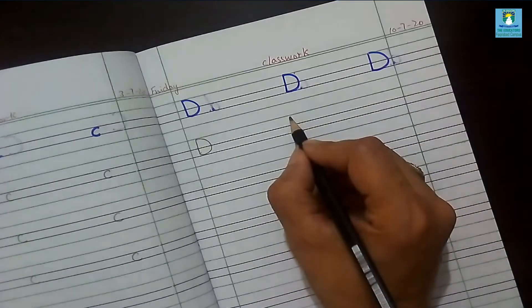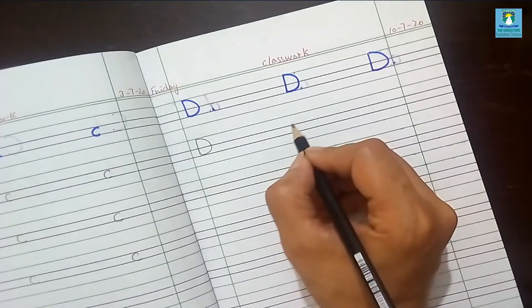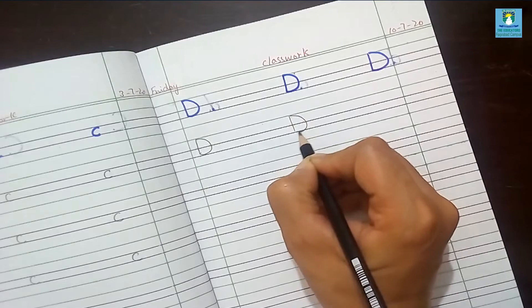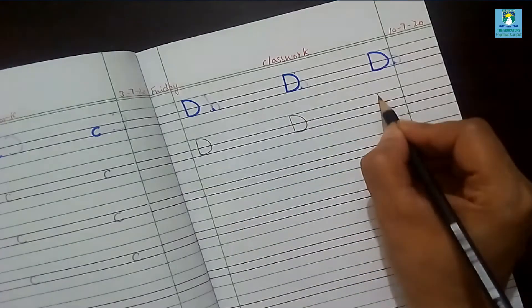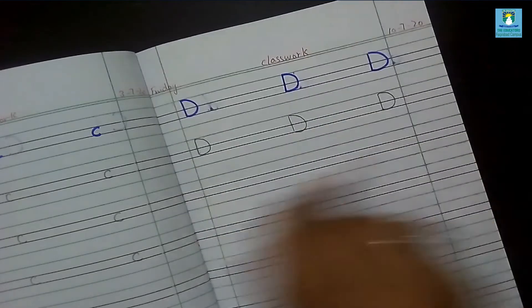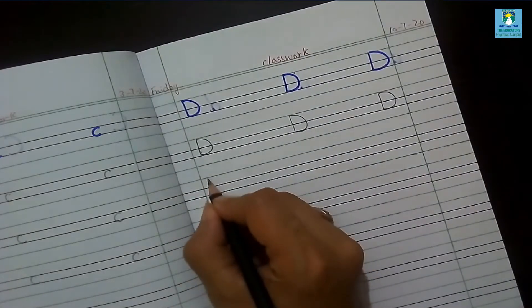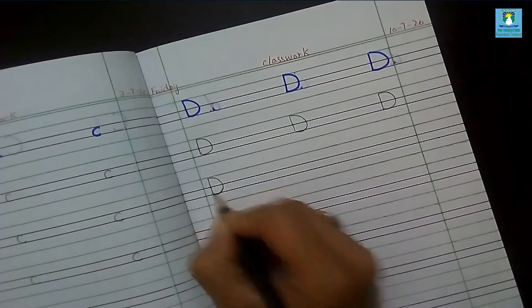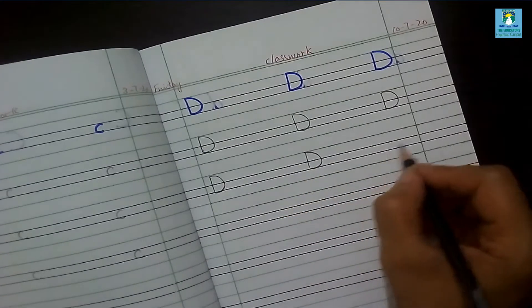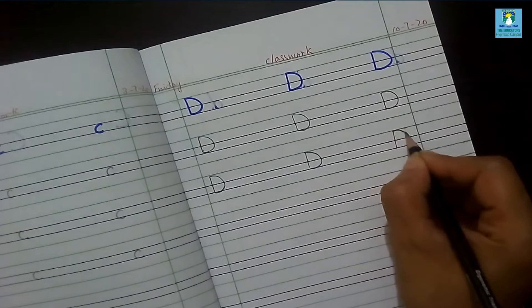So capital D will be written on the upper three lines. Start from the skyline and end on the grass line, like this. A straight line, then a curved line. Write with me. It's D. Read it with me. D.